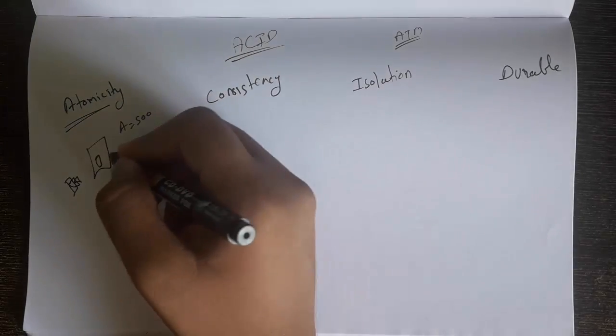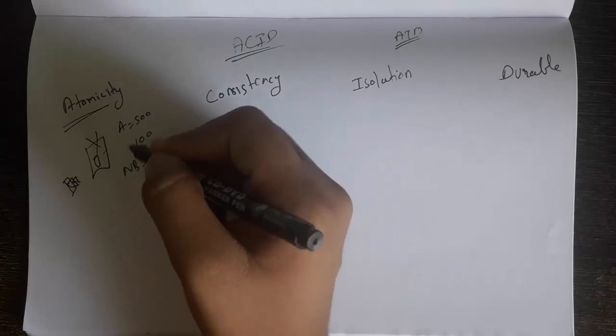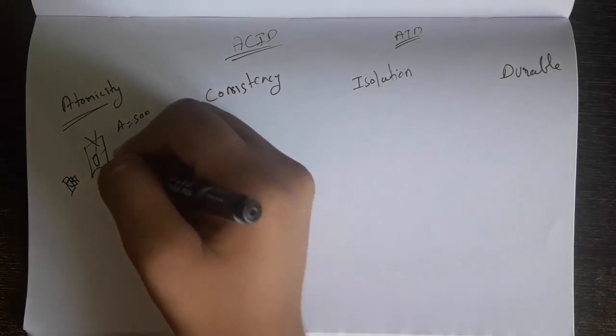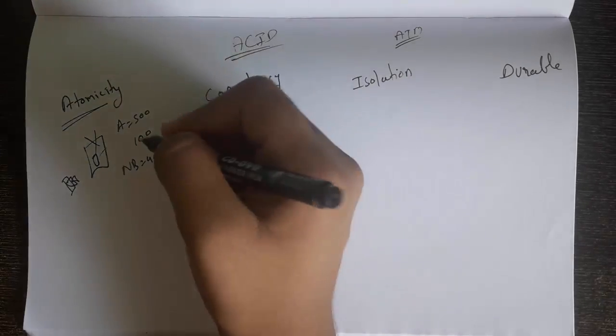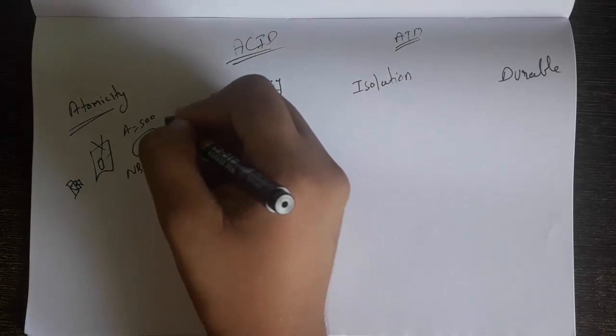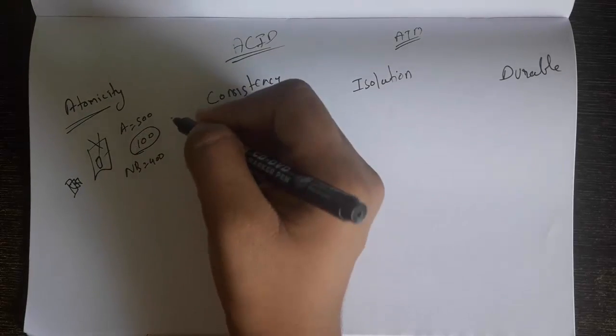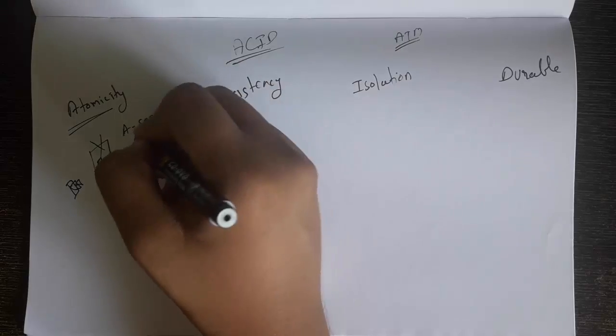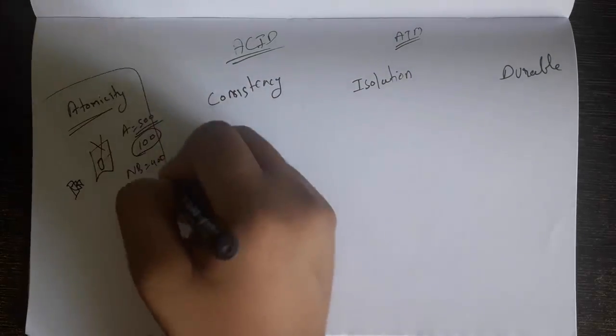There should be a deduction of 100 rupees and the new balance should be 400, but what if there is a problem in the ATM and it got shut down before completing the transaction? I didn't receive my money. This transaction will reverse back and I will get no money but my account balance will remain the same. So this is Atomicity.